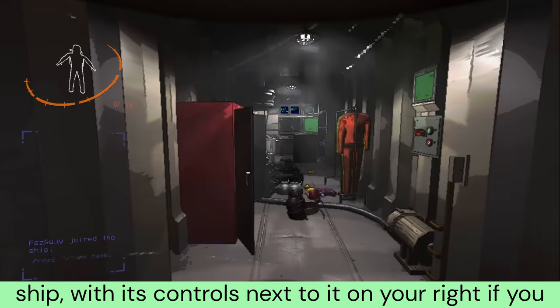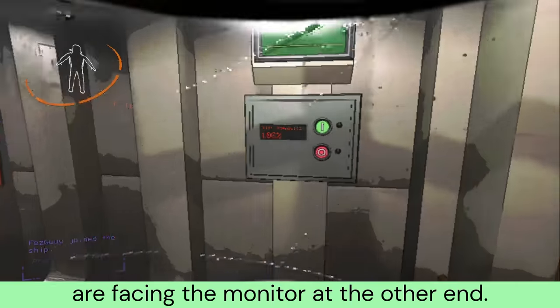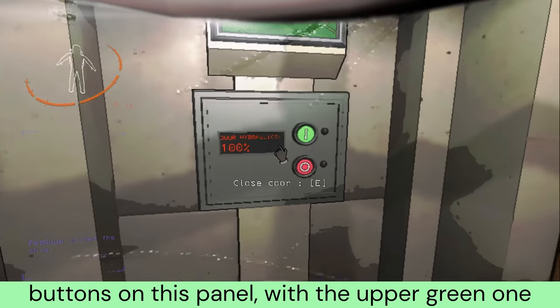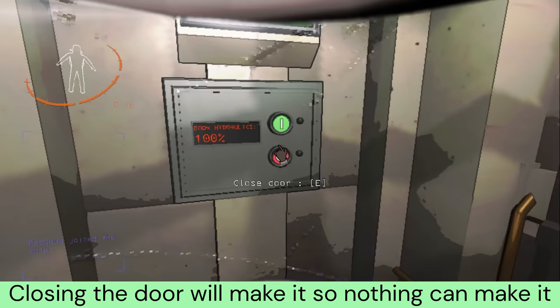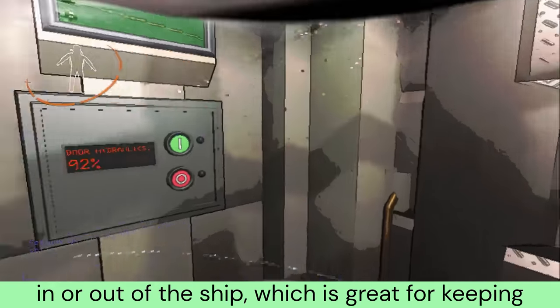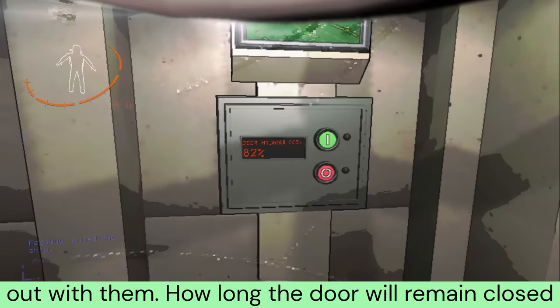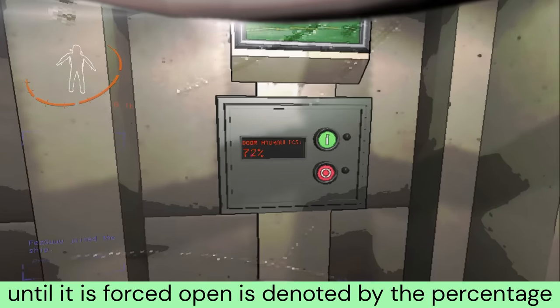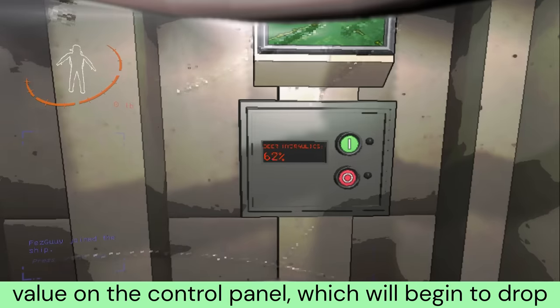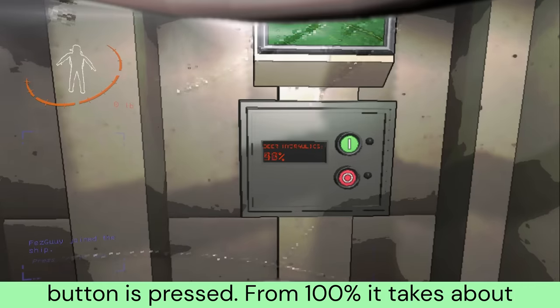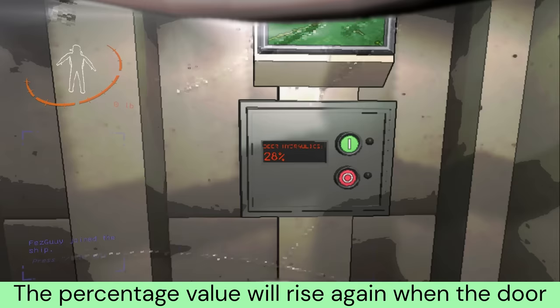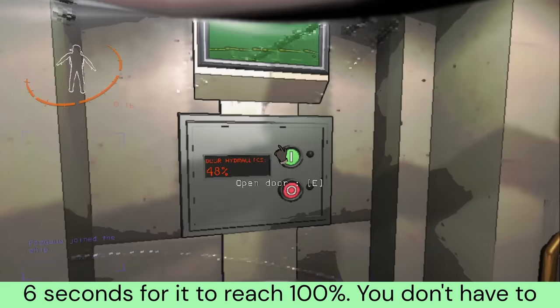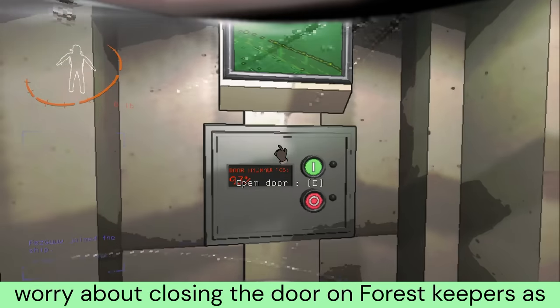The hydraulic door is found at the entrance to the ship, with its controls next to it on your right if you are facing the monitor at the other end. The door can be opened and closed with the buttons on this panel. Closing the door will make it so nothing can make it in or out of the ship, which is great for keeping dangers out, but can also lock you in or crewmates out with them. How long the door will remain closed until it is forced open is denoted by the percentage value on the control panel. From 100%, it takes about 30 seconds for the door to open on its own.